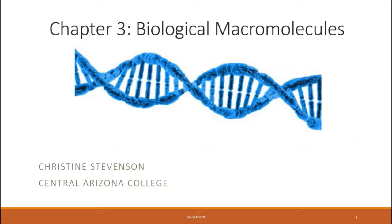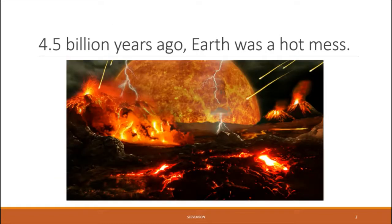In this chapter, we're going to continue that discussion by talking about biological macromolecules, but we're going to start the discussion in what might be sort of a non-intuitive place. We're going to start by talking about what Earth was like 4.5 billion years ago, shortly after the planet was formed. The earliest history of Earth was called the Hadean Period, and here is a depiction of what that period may have looked like based upon our understanding of the geological evidence from that time.